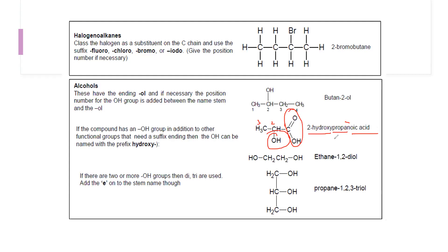If a compound has three OH groups on a three-carbon chain, it is propane-1,2,3-triol. We write the full 'ane' because 'tri' starts with the letter t, not a vowel, so the 'e' is retained before 'triol', and we list all three positions: 1, 2, and 3.